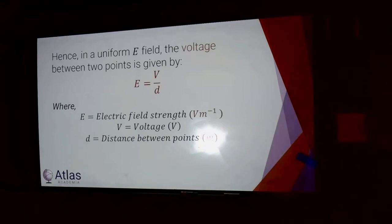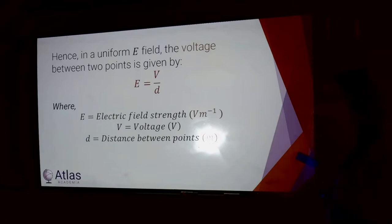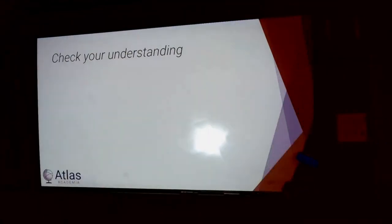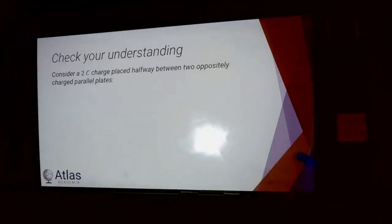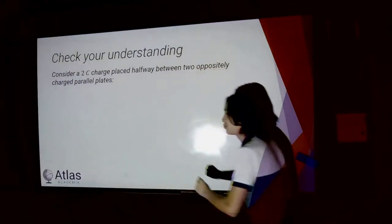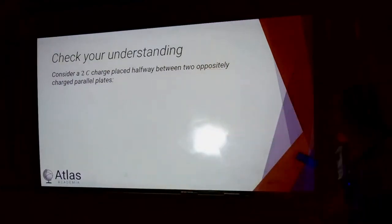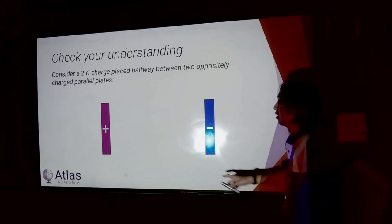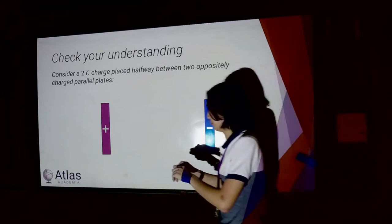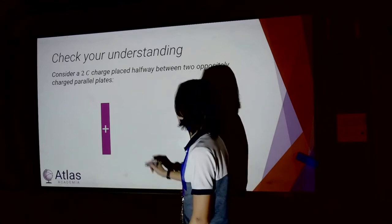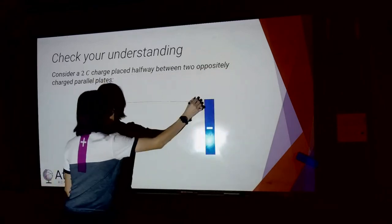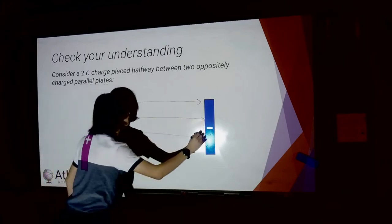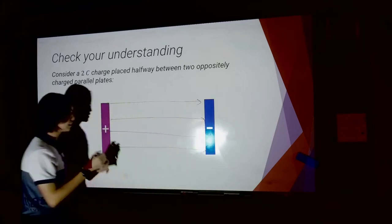We're going to look at an example that brings it all together. Here's an electric field — you don't need to draw this, but what can you draw in this field? Field lines — parallel, because it's a uniform field — going from positive to negative, evenly spaced. You can also draw equipotential lines: the perpendicular lines that are evenly spaced. You should add the distance between the two plates, and if you have the field strength, throw that on there as well.